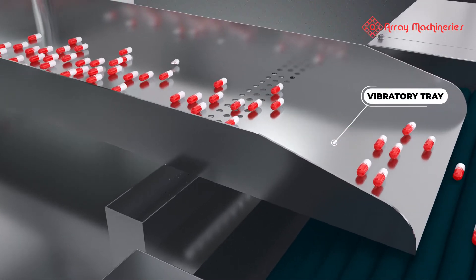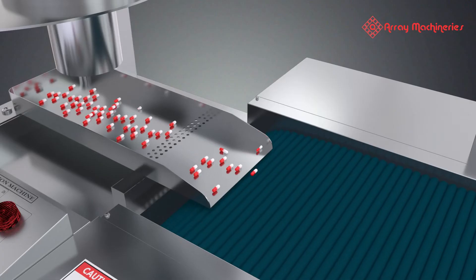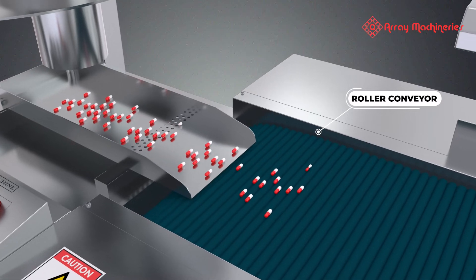The dust or fine particles are collected into the dust collection tray placed below the holes of the feeder tray. These tablets move on the roller conveyor of the machine for inspection purposes.